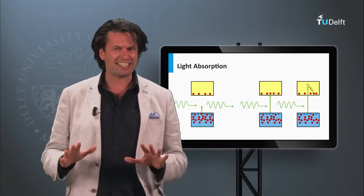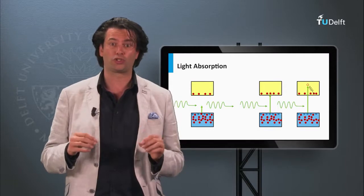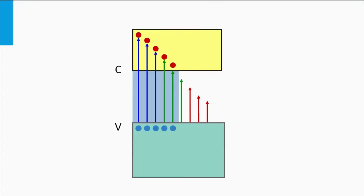Let's see how the band gap affects the open circuit voltage and short circuit current density. In this illustration, the conduction band, valence band, and band gap of the absorber material are shown. I represent the solar spectrum by arrows with various lengths and colors. The blue arrows correspond to energetic photons whose photon energy is much higher than the band gap. The green and red arrows correspond to photons with lower photon energy. The red photons have a low energy — even smaller than the band gap energy. Note that in this illustration the band gap is relatively large.